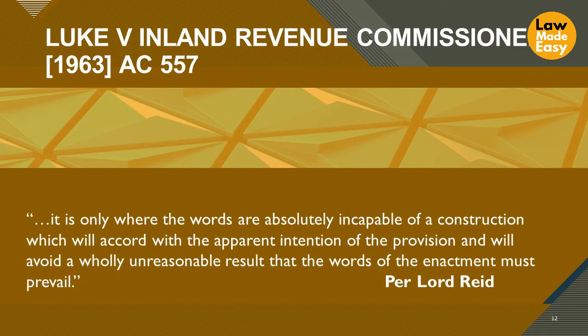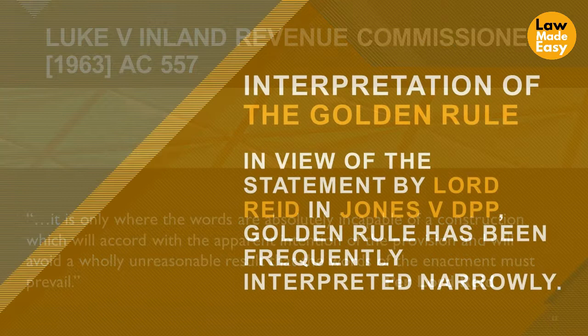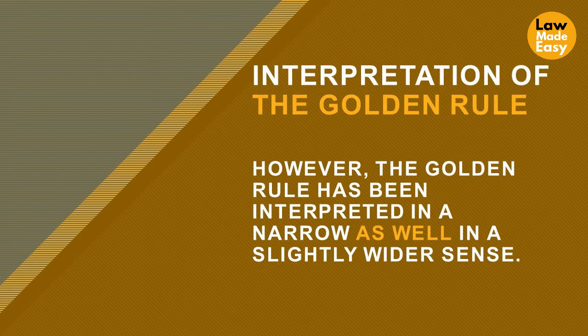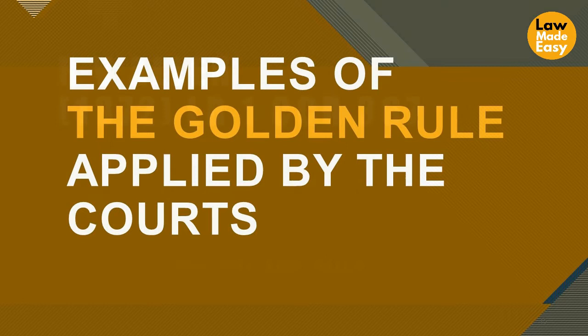In Kurtz & Co v Inland Revenue Commissioners, Lord Reid stated: 'Where a statutory provision on one interpretation brings about a startling and inadequate result, this may lead the court to seek another possible interpretation which will do better justice.' In Luke v Inland Revenue Commissioners, Lord Reid stated: 'It is only where the words are absolutely incapable of a construction which will accord with the apparent intention of the provision and will avoid a wholly unreasonable result that the words of the enactment must prevail.' In view of the statement in Jones v DPP, the Golden Rule has been frequently interpreted narrowly, though it has also been applied in a wider sense depending on circumstances.